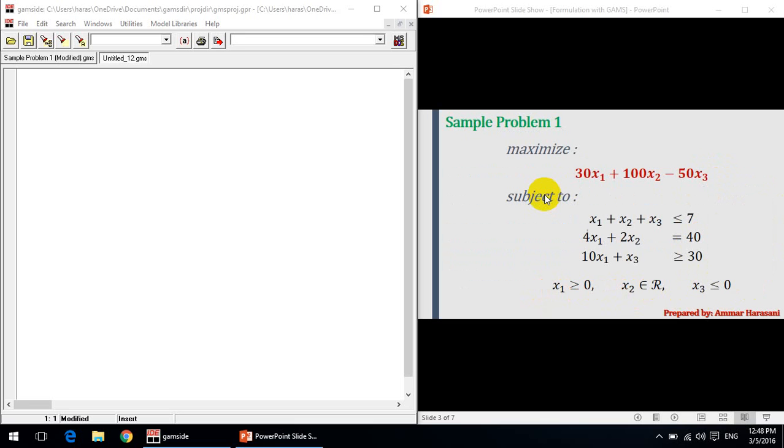We are going to start our modeling with a sample problem. I named it sample problem 1. As you can see, it's very simple, an objective function and a set of constraints. Let's start. We need to open GAMS. As you can see, go to the top left corner.